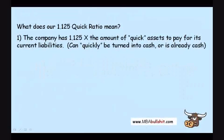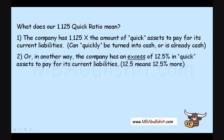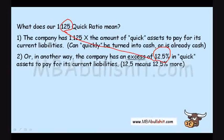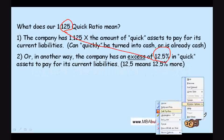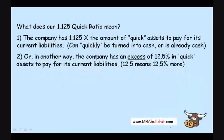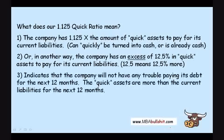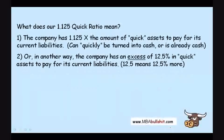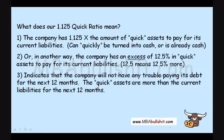That means the company has 1.125 times the amount of quick assets — assets that can quickly be turned into cash or are already cash — to pay for its current liabilities. In other words, the company has an excess of 12.5% in quick assets (0.125 equals 12.5%). This indicates the company will not have any trouble paying its debt for the next 12 months.